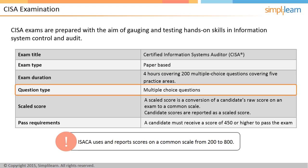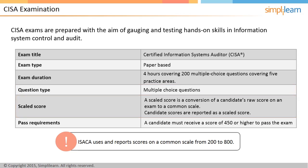The CESA student should choose the correct answer from four multiple-choice options, with one correct answer intended per question. ISACA uses a scale from 200 to 800 when grading the examination, and the minimum pass mark for the CESA exam is 450 marks.